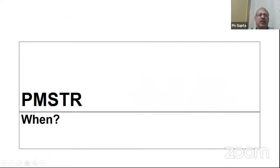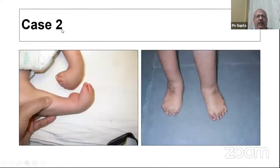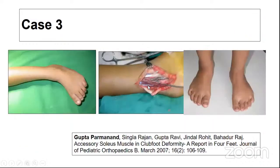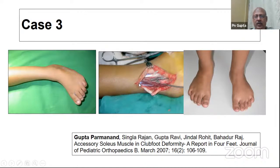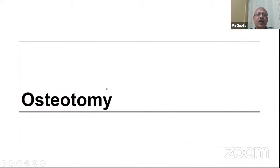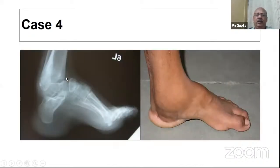Does PMSTR still have a role? In syndromic feet, a PMSTR can result in a better-looking foot. In situations where there is a muscle called the accessory soleus — an accessory muscle — even after tenotomy this muscle will not allow the equinus to correct. We described this muscle in four feet back in 2007. Regarding osteotomy: when there is significant cavus deformity after a PMSTR done elsewhere, you can appreciate the cavus deformity clearly.